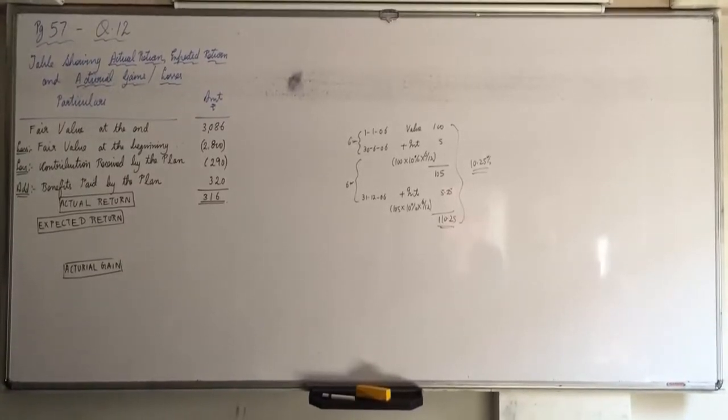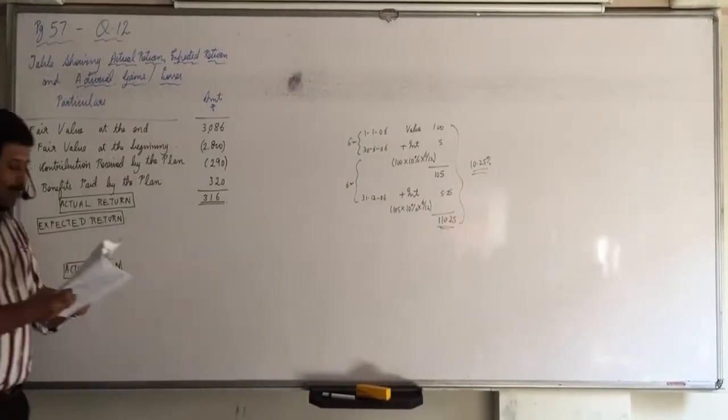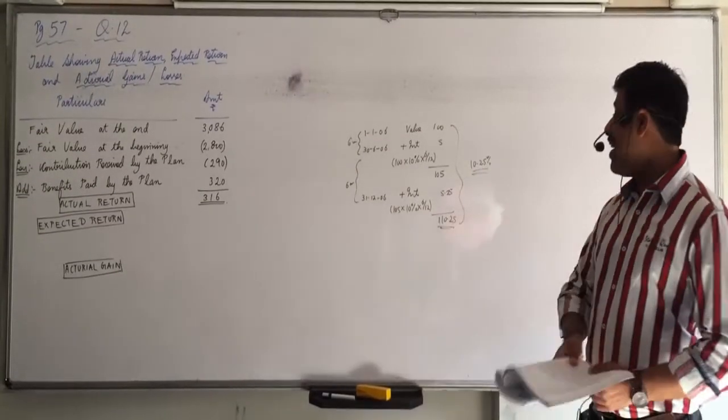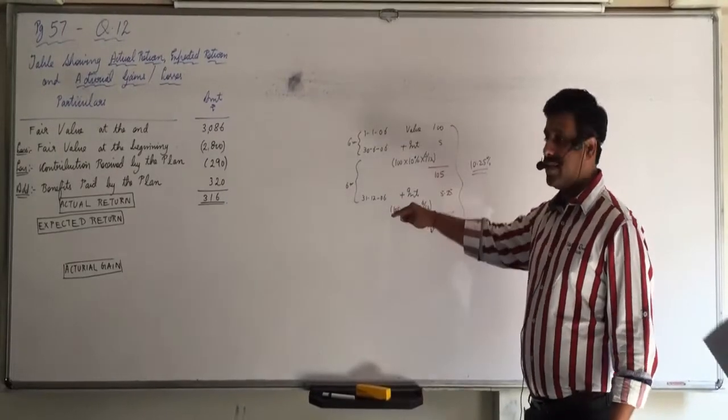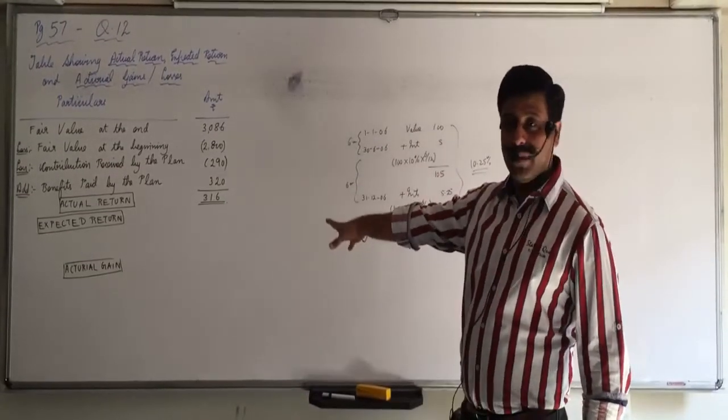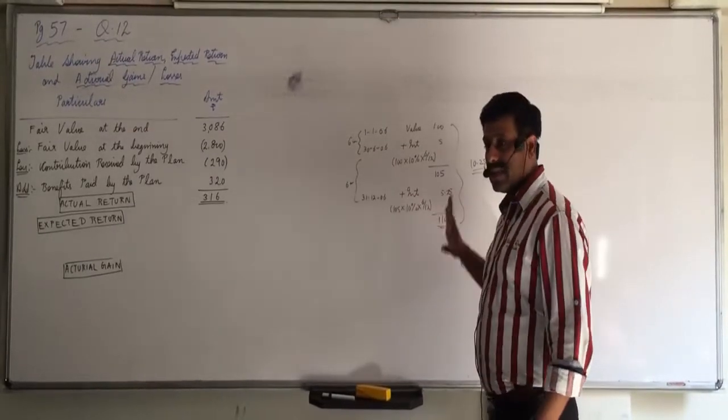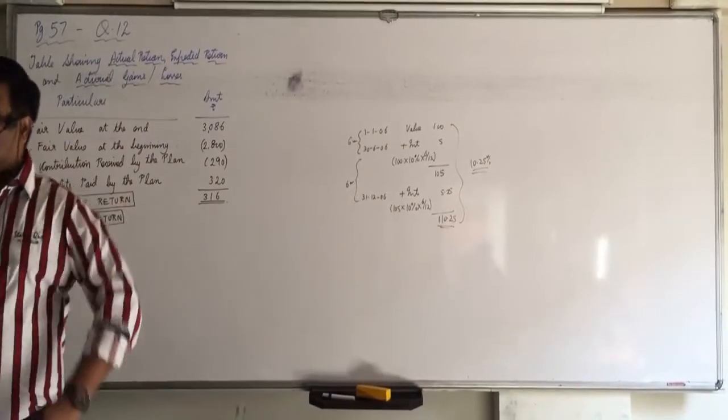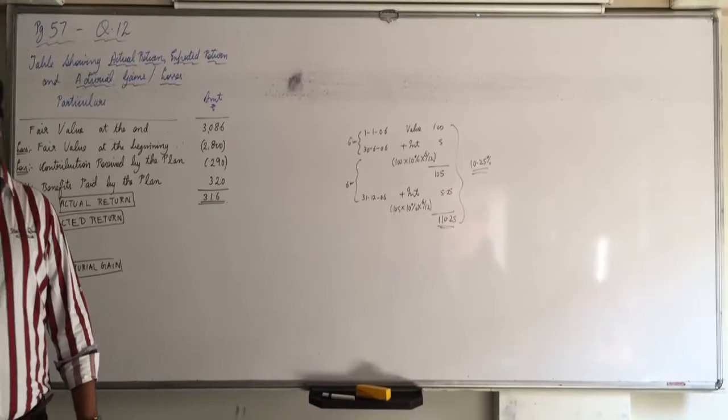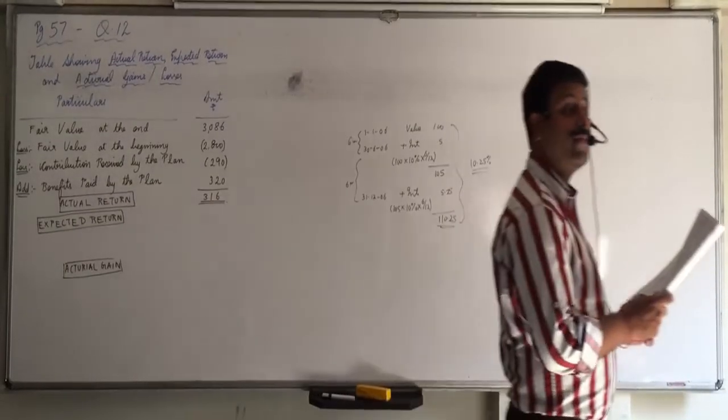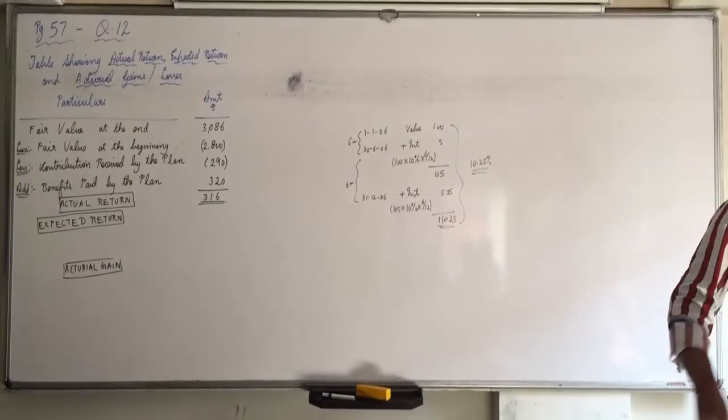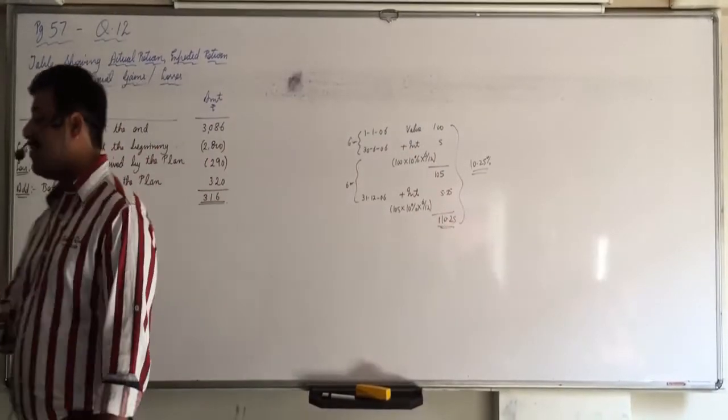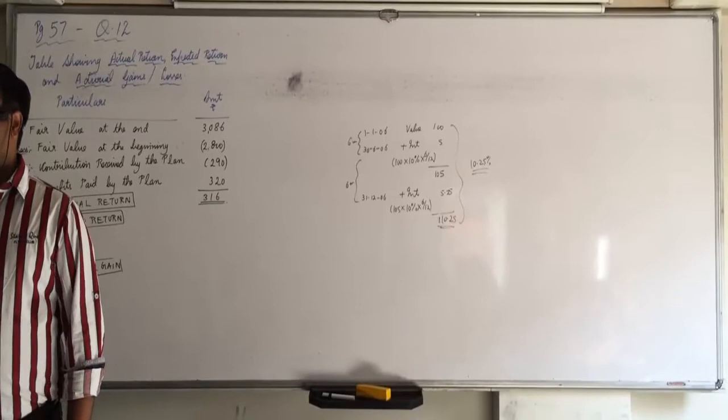One more question, number 16A. Now you understand the reason why we did not take 10%. Practically we would have counted 10.25% on opening value. On 30th June you would have counted 10% for 6 months. But why we did not do it, see this Question 16A. As on 1st April 2011, the fair value of plan assets was $250,000.